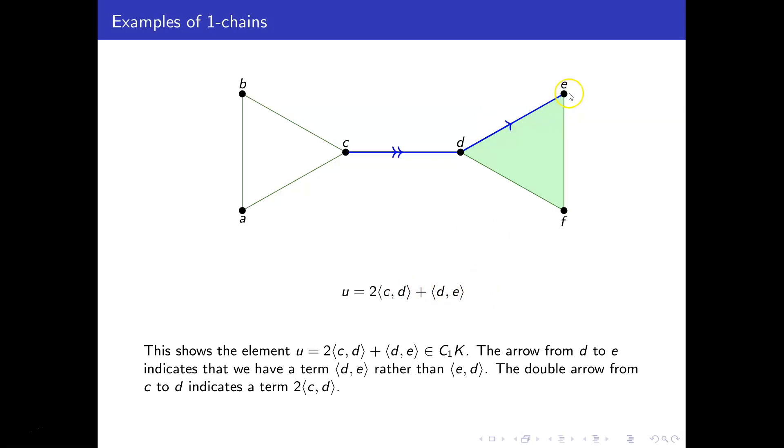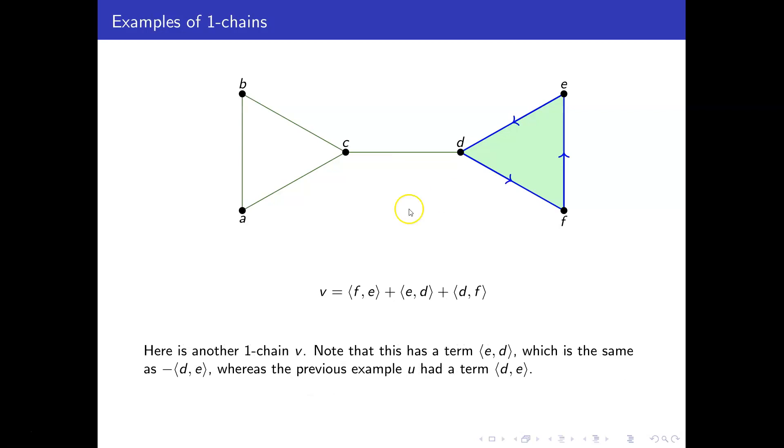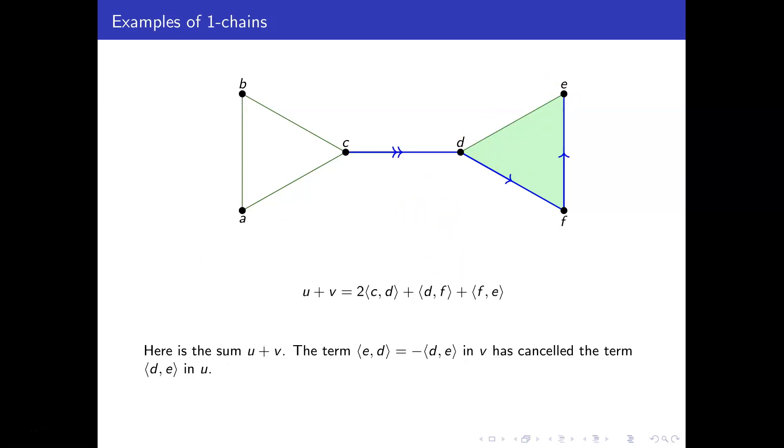And if it was, we could instead have had a term E comma D, that would have an arrow in the opposite direction, E comma D, and that would be the same as minus DE. Here's another one chain, which we're going to call v, that's pointy ⟨FE⟩ plus pointy ⟨ED⟩ plus pointy ⟨DF⟩. So FE is this one, ED is this one, and DF is this one here. So in this example, we've got a term ED going in this direction. Previous example, we had a 1-chain u, which involved DE going in the opposite direction. And remember ED and DE are negatives of each other.